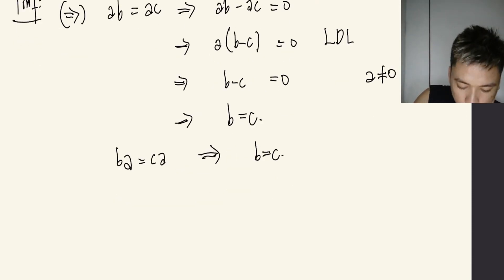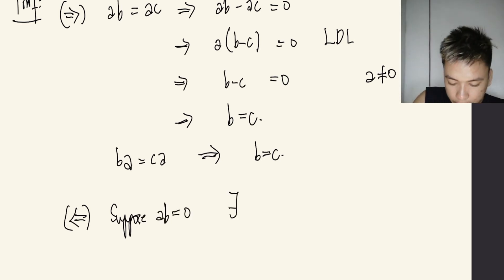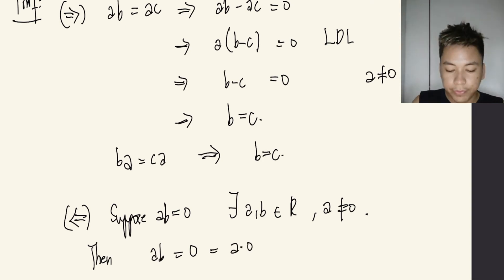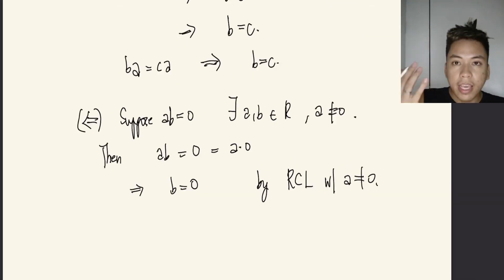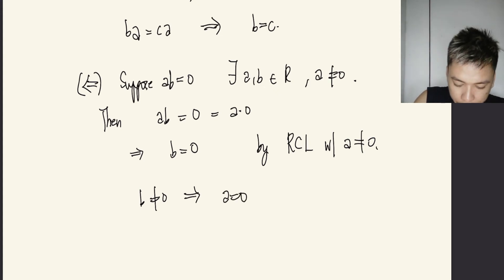Now let's go to the backward direction. Suppose AB equals 0 for some A, B in R, and in this case A is not 0. Then AB equals 0 is the same as A times 0. This implies that B is 0. This is by right cancellation law with A not equal to 0. Similar fashion goes with if B is not 0, then A is 0. Therefore, R has no zero divisor.